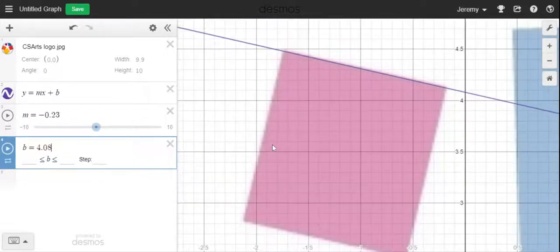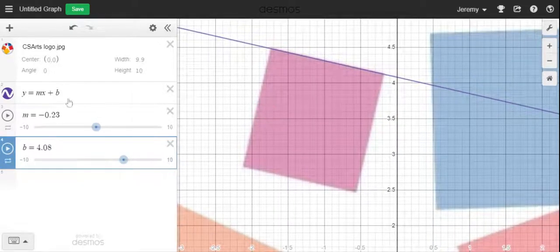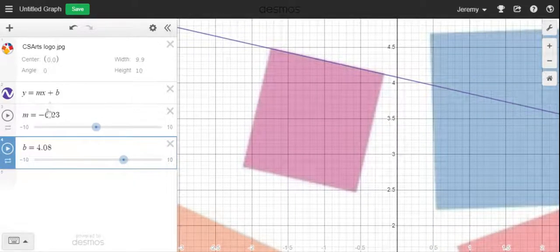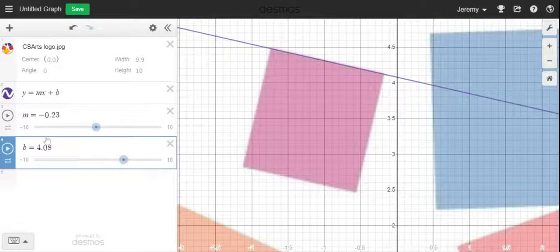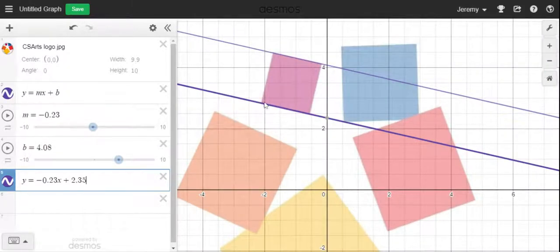So I've got a line and that line is y equals mx plus b where the slope is negative 0.23 and the y-intercept is 4.08. I have gone ahead and entered in the other line that is parallel to that one.